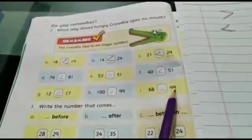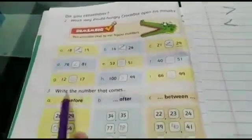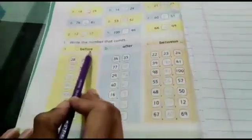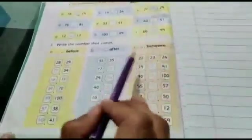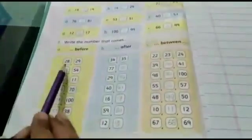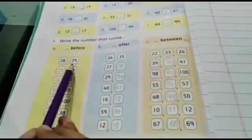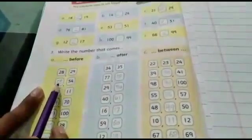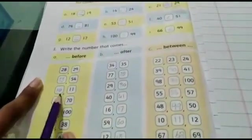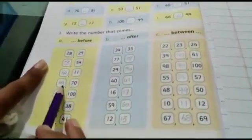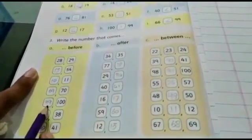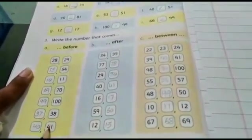Now question number 3 is: write the number that comes. You have to tell part A: before means pehle, part B: after means baad, C: between means in the middle. Now you are given numbers here. You can tell what comes before, like 28, 29 - 28 comes before 29. What comes before 54? 53. Similarly, what comes before 11? 10. What comes before 17? 16. What comes before 69? 68. What comes before 100? 99. Before 38? 37. Before 41? 40.